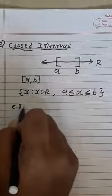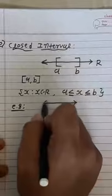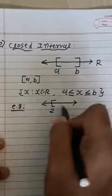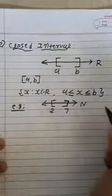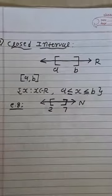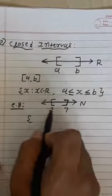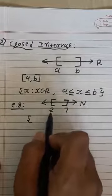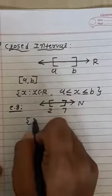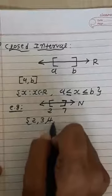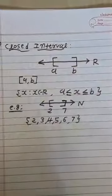Let us take one example. In closed interval [2, 7] in natural numbers, all numbers between 2 and 7, as well as 2 and 7 themselves, are included. So the answer is the set {2, 3, 4, 5, 6, 7}.